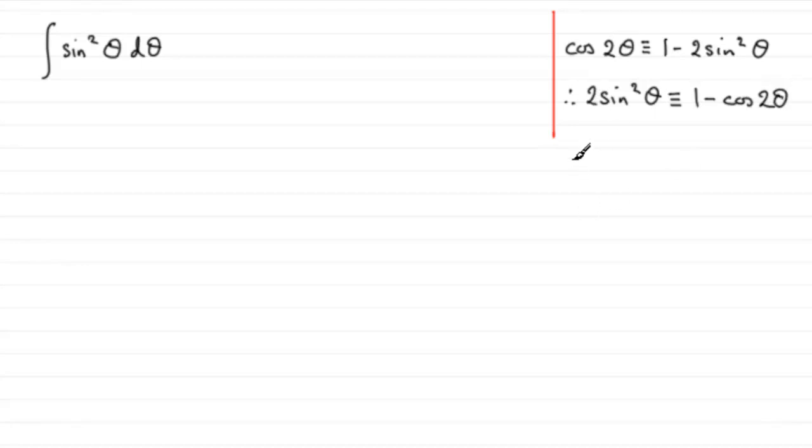And if we now divide by 2, you can see that we end up with sine squared theta is identical to, well you could write 1 minus cos 2 theta all over 2, but I prefer to write half bracket 1 minus cos 2 theta. You'll see why in a moment.